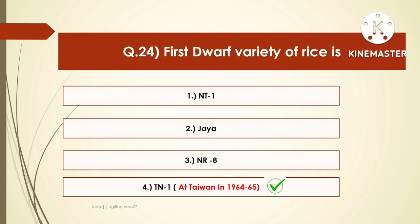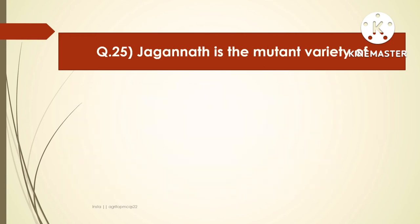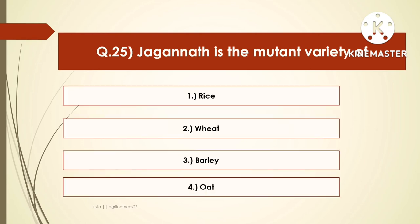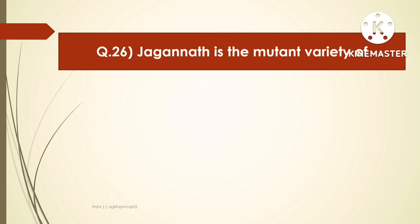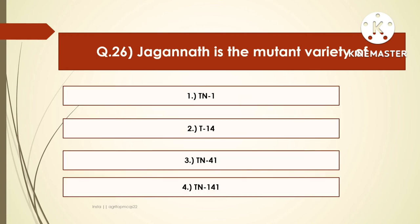Jaya is the miracle rice of India. The next question is: Jagannath is a mutant variety of which crop? Options are rice, wheat, barley, or oat. Jagannath is a mutant variety of rice. The next question is: Jagannath is a mutant variety of — TN1, T14, TN41, or TN141. The right answer is TN141, Taiwan Native 141. It is a mutant variety of Taiwan 141.